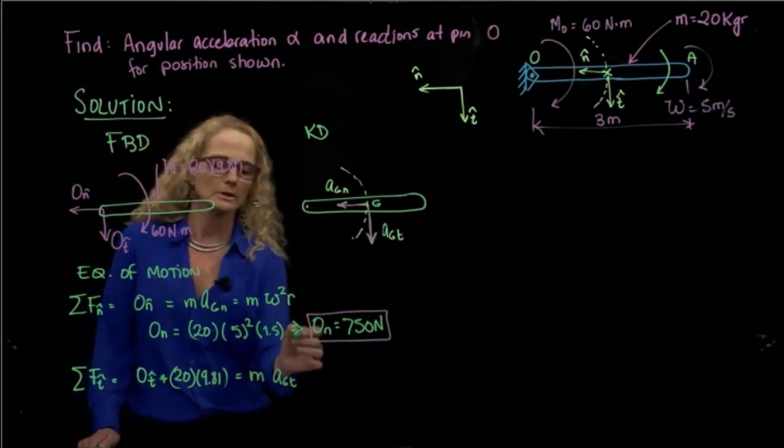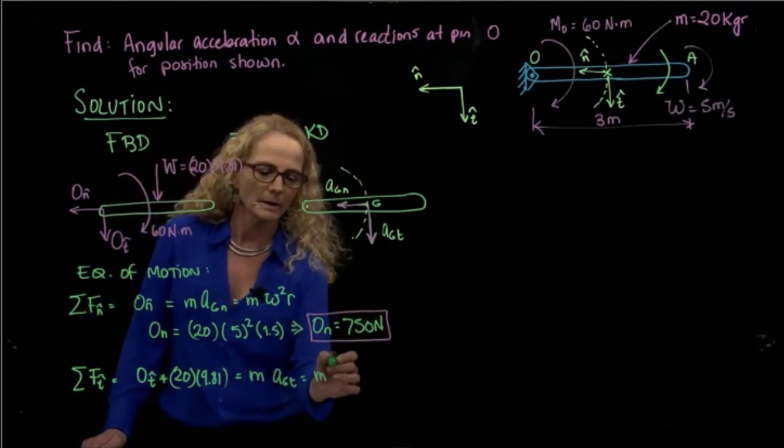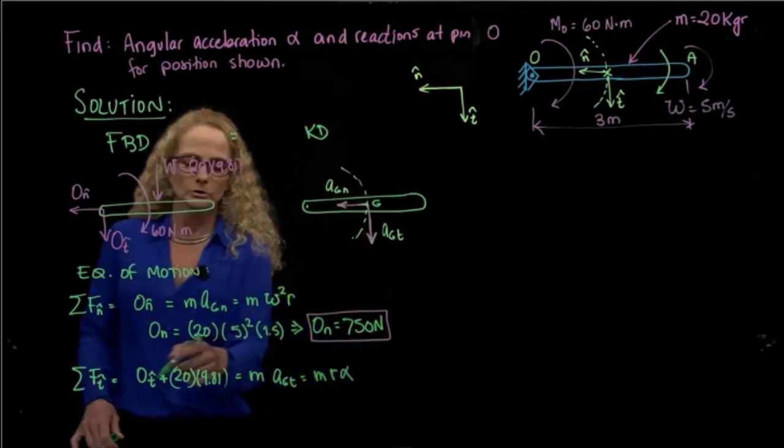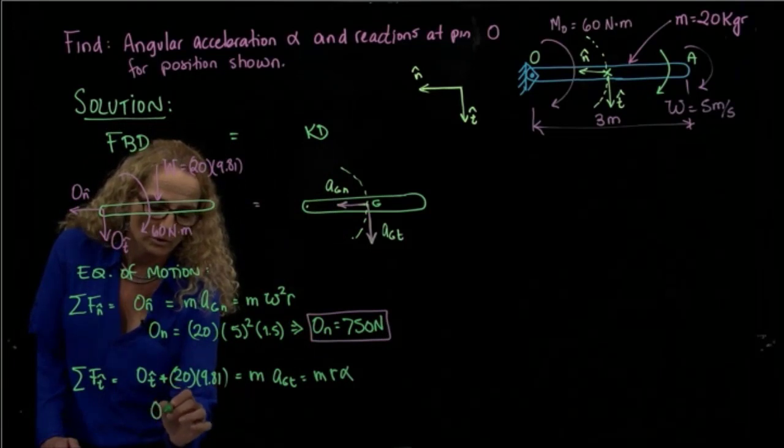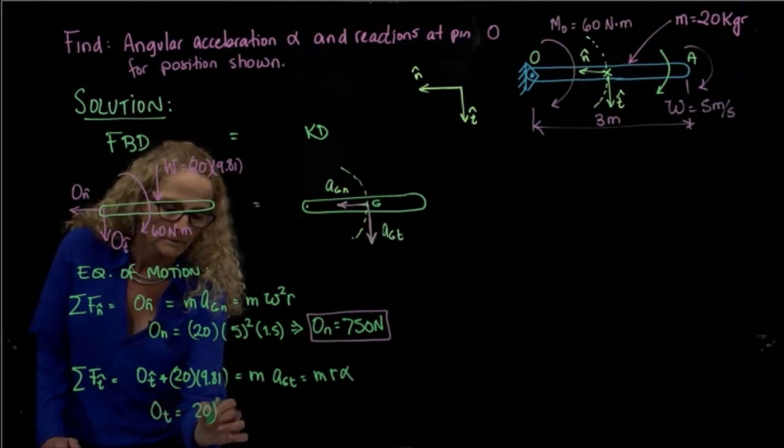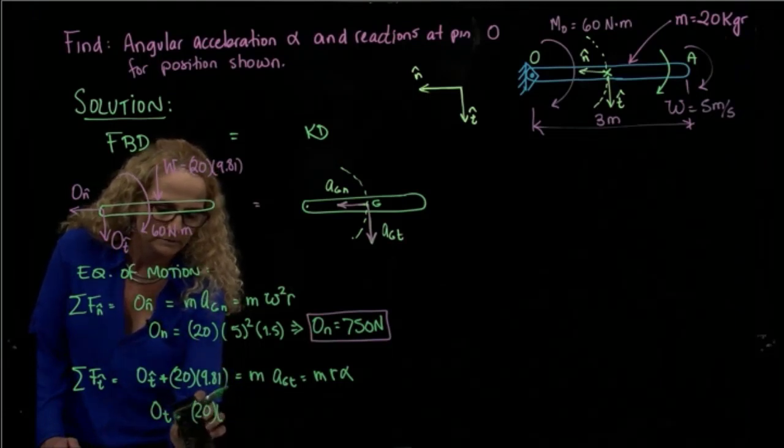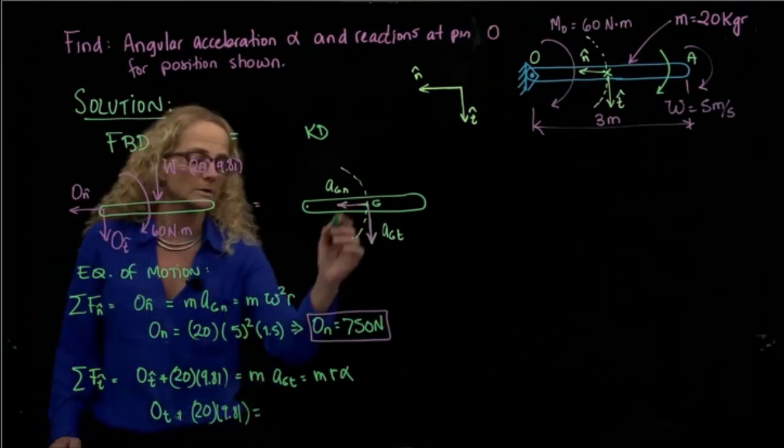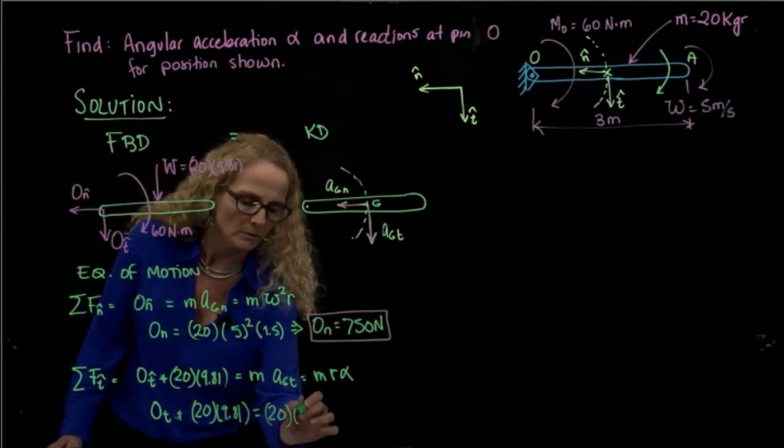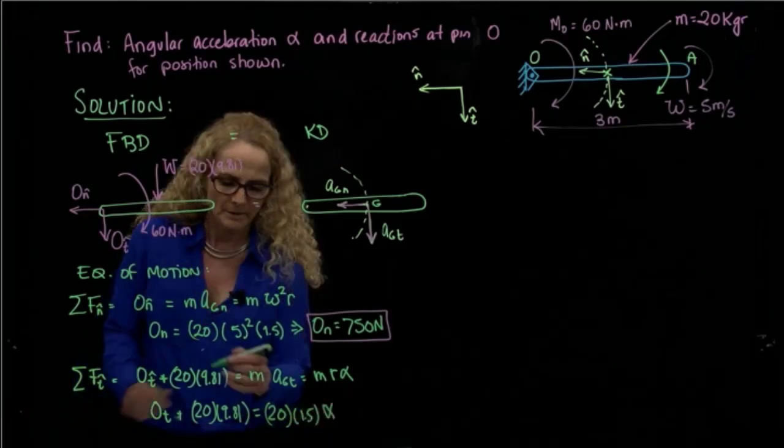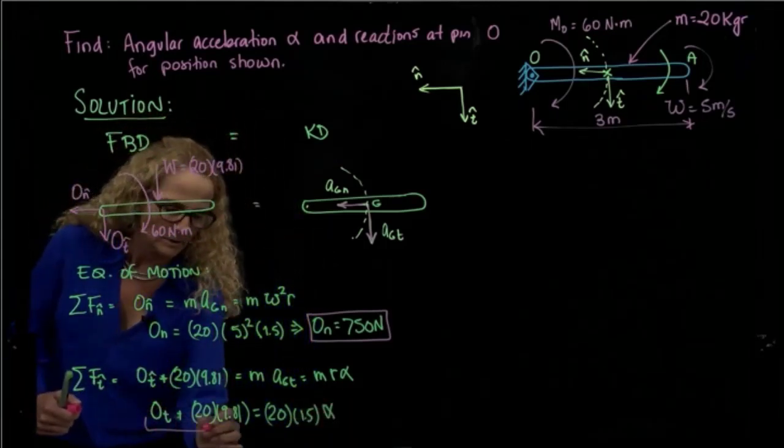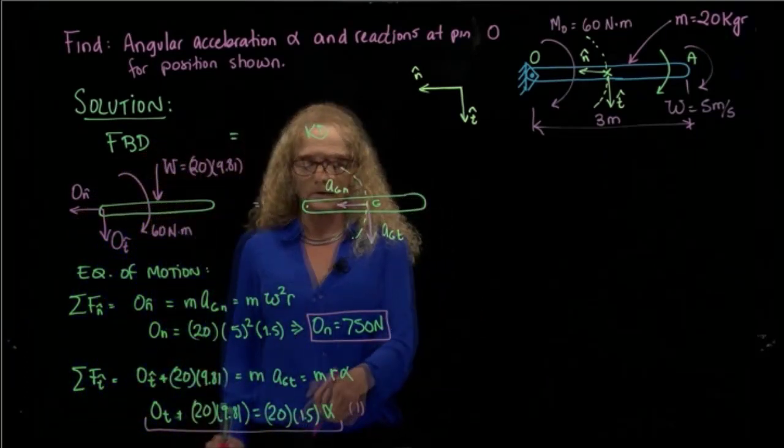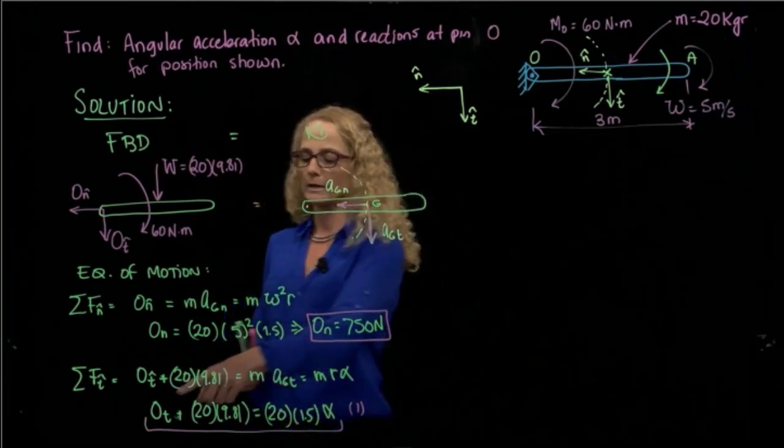And as you remember, the tangent acceleration is my radius times angular acceleration, which I do not know. So from here I have two unknowns, which is O_T plus, equals 20, the radius I know, times alpha. So this is a first equation that I will need to solve. So I need another equation to be able to solve angular acceleration in order to calculate the O_T.